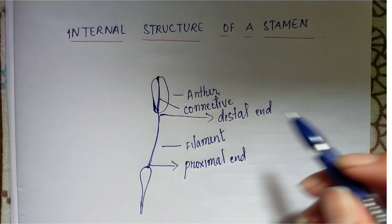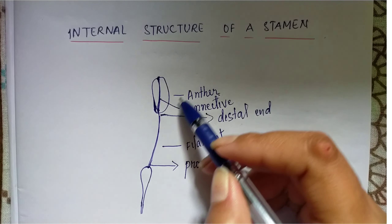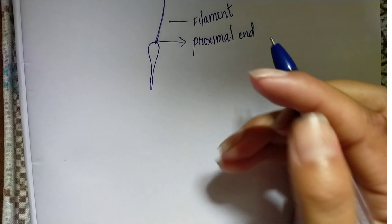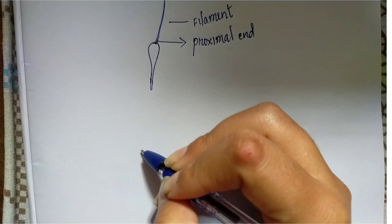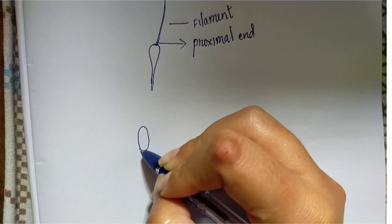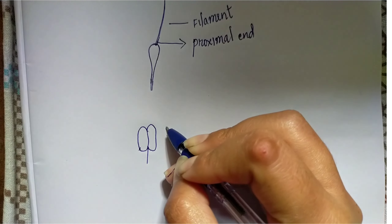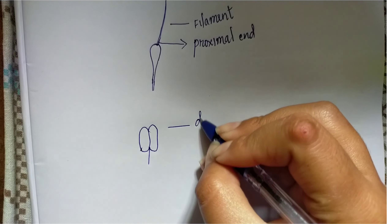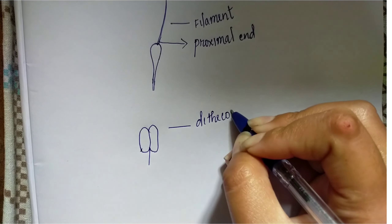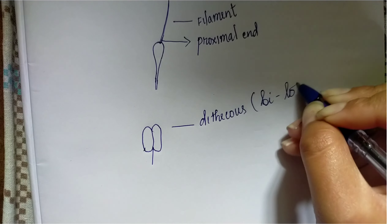Now we shall take a closer look at this anther. In some plants, the anther is bilobe. When it is bilobe, it is known as dithecous. Dithecous means bilobe.